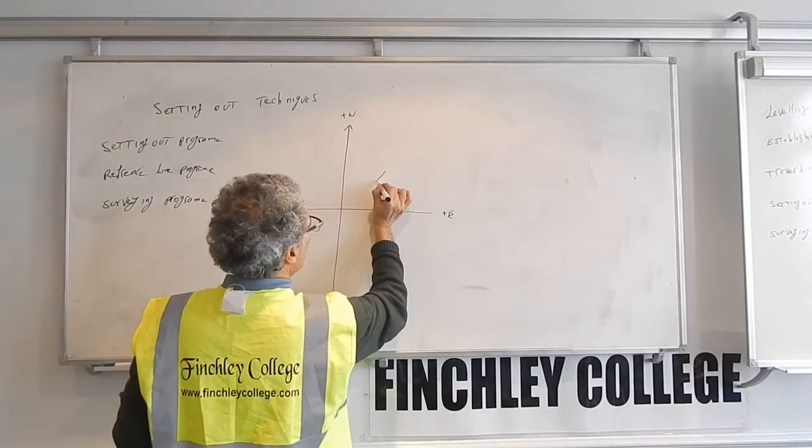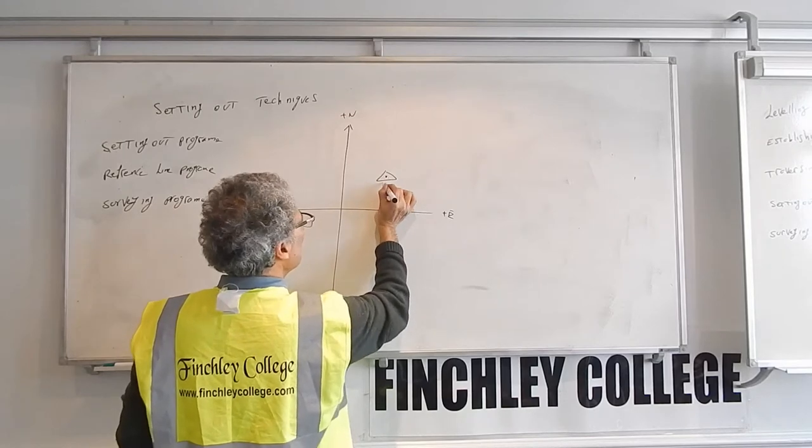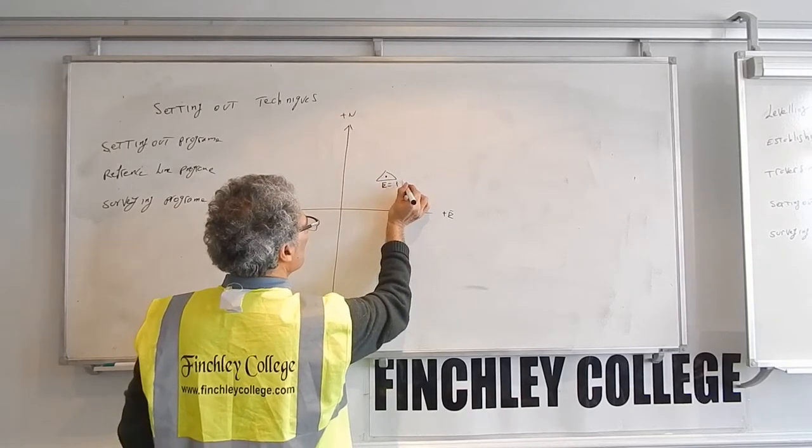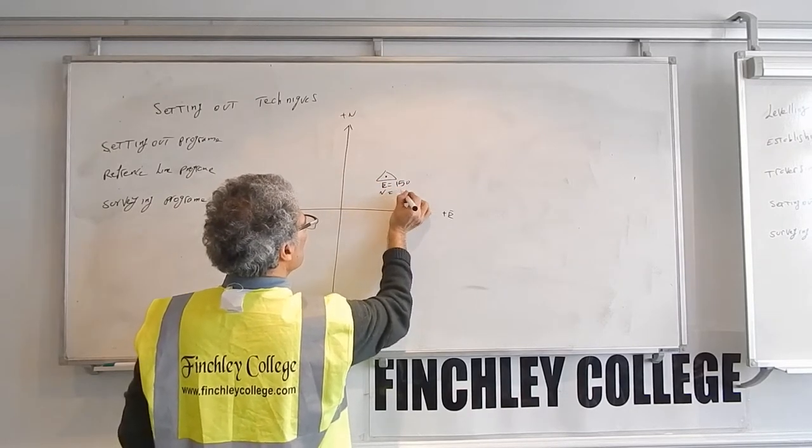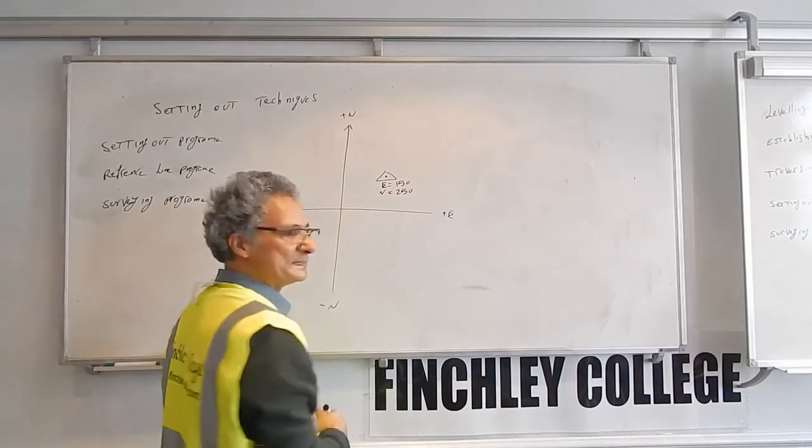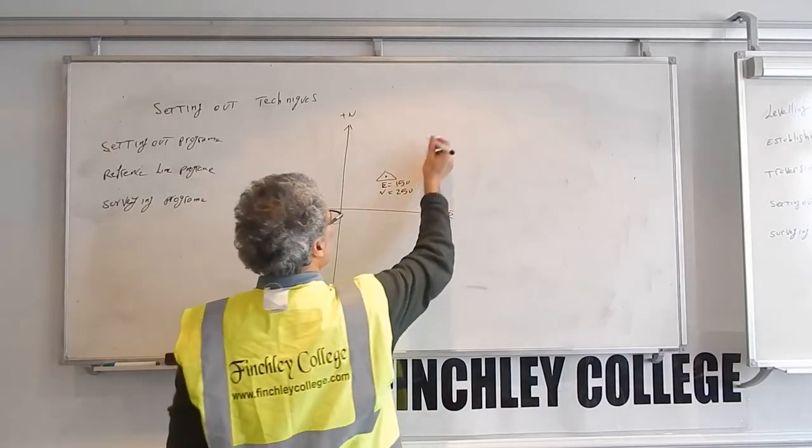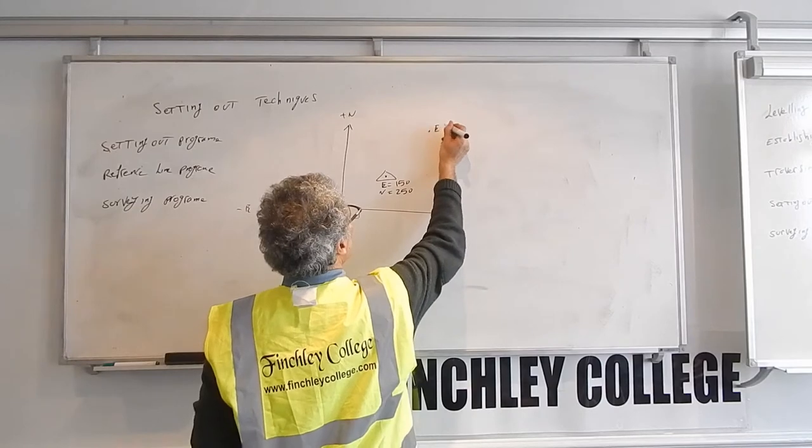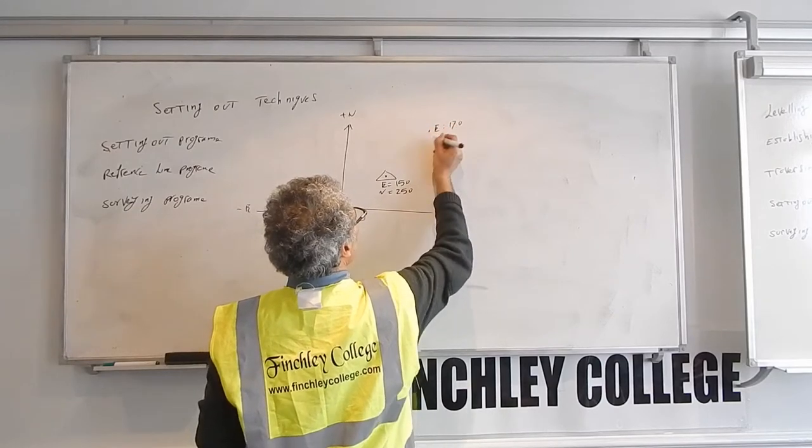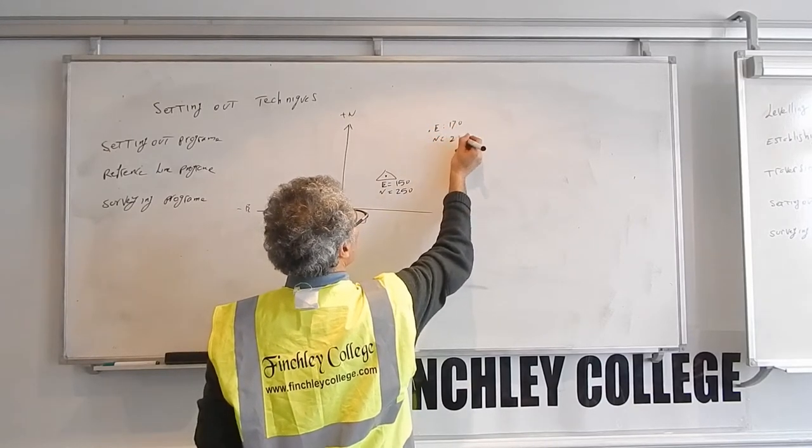Supposing you've set up here with the easting of this point at 150 meters, northing of 250 meters, and you want to set out the point with the easting of 170 meters and the northing of 290.